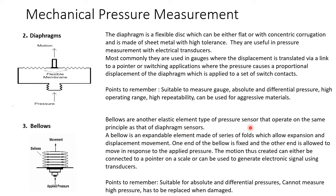Bellows are another elastic element type of pressure sensor operating on the same principle as the diaphragm. When pressure is applied, the bellow expands and the movement is transferred to a gauge or switch. One end of the bellow is fixed and the other end moves in response to pressure. Points to remember: suitable for absolute and differential pressures, cannot measure high pressure, and must be replaced if damaged since the folds that enable expansion cannot be individually repaired.